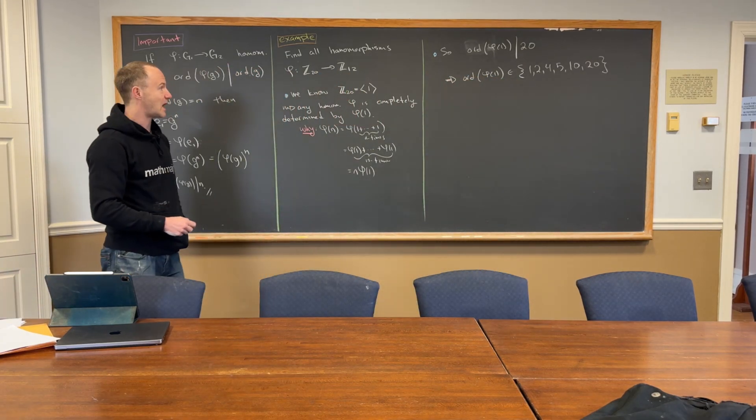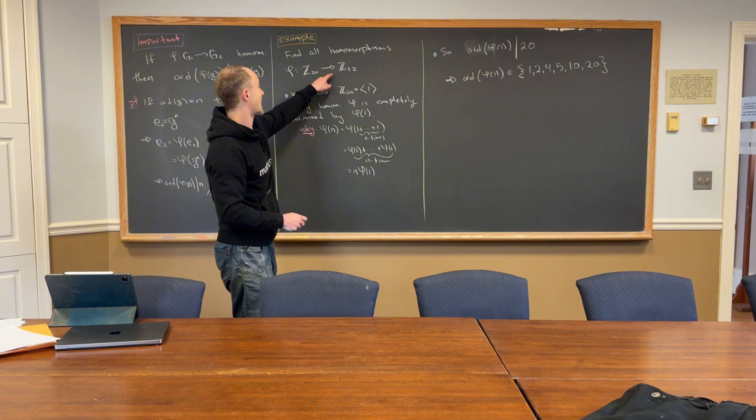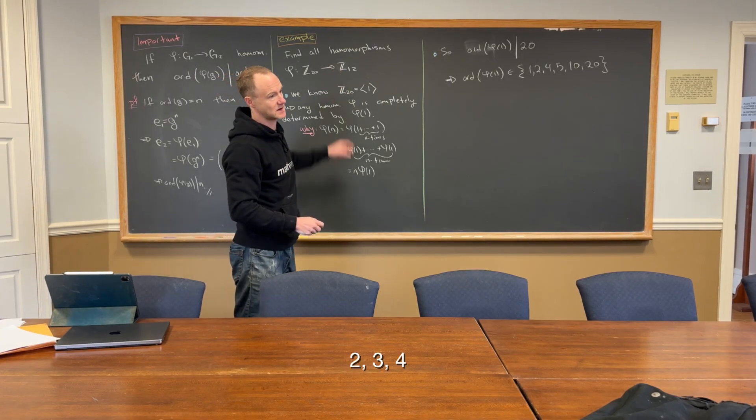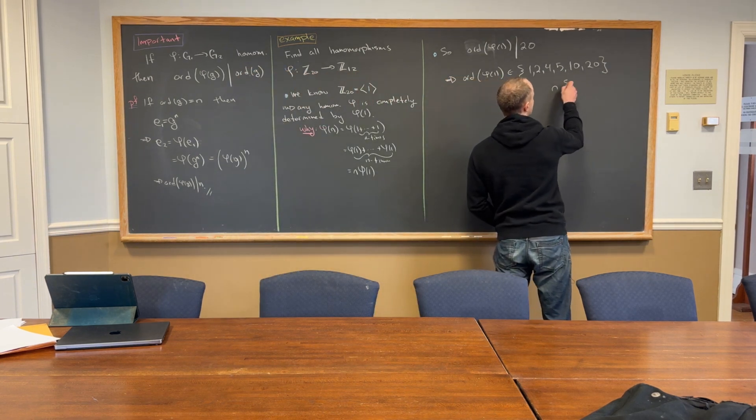Now, some of these are not possible, right? Because, check it out, what are the possible orders inside of Z12? Two, three, four, six. Yeah, and one.